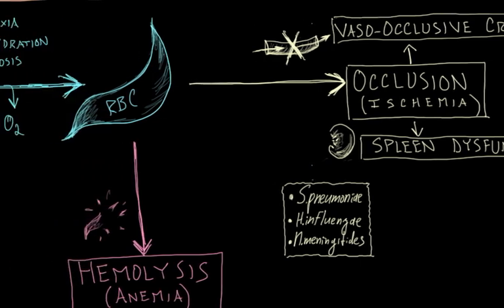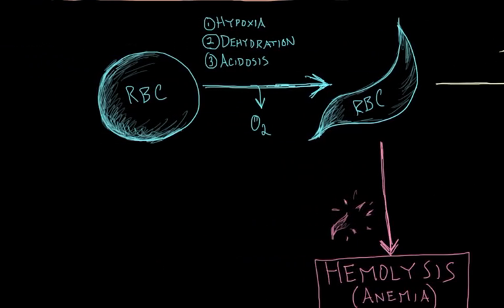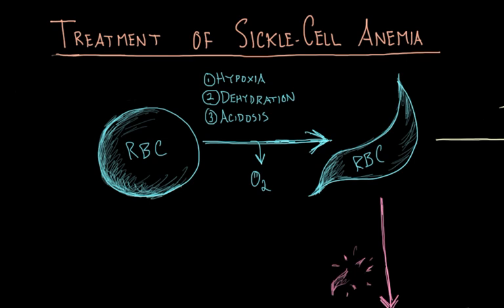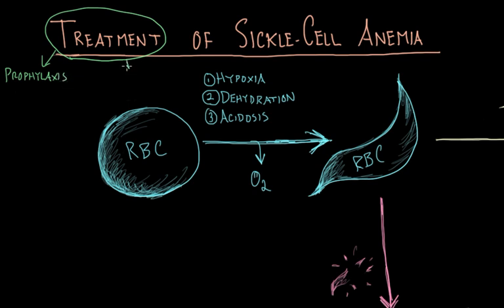So how do we manage some of these manifestations? Treatment can be discussed in terms of two things: prevention or prophylaxis, and if we can't prevent the disease process, how do we intervene. Intervention can either be acute or chronic.